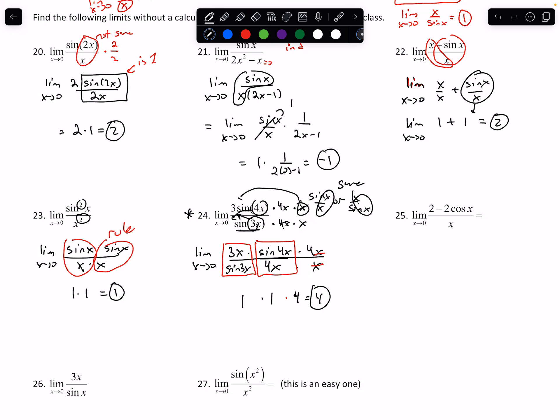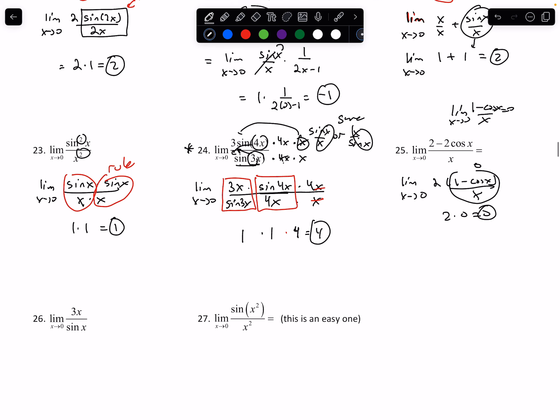For 25, this is our rule. This is our cosine rule. It says 1 minus cosine of x over x as x approaches 0 is 0. Notice on the top, I can just factor out a 2. That becomes 1 minus cosine of x over x. That's 0 right there. So 2 times 0 is 0. We don't see this one too much. It's pretty boring.